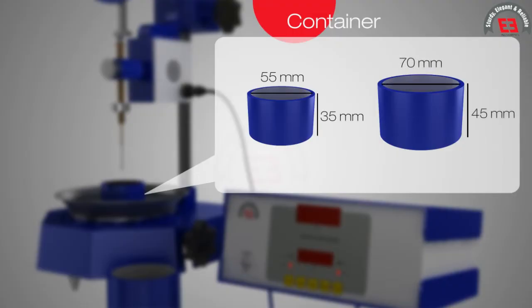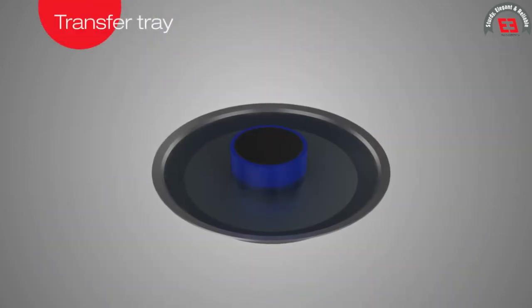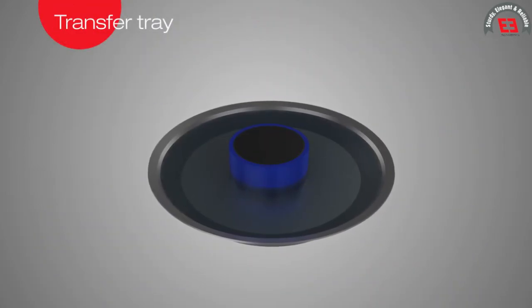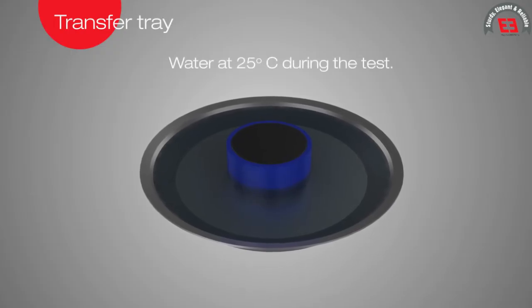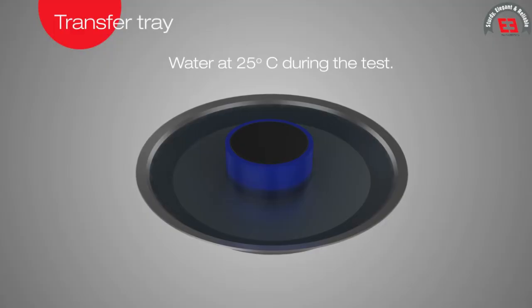With penetration values exceeding 225. Transfer Tray. A small tray which keeps the bitumen container fully immersed in water at 25 degrees Celsius during the test.